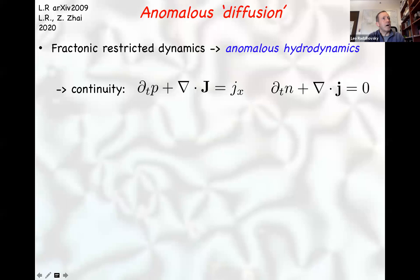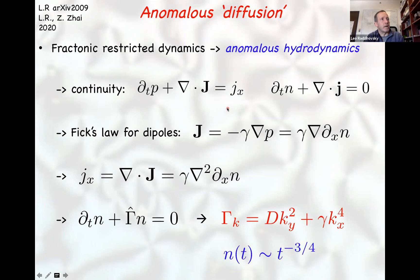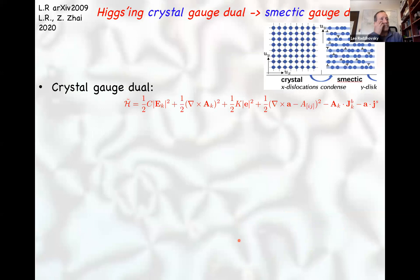One can also do hydrodynamics. Taking the two continuity equations — for charges and for dipoles, with the dipole conservation law violated by charge motion j in the x-direction — and writing down Fick's laws for dipoles and charges in the y-direction but no Fick's law for the charge current in the x-direction, one gets anomalous hydrodynamics. Rather than having standard k-squared diffusion, the relaxation rate goes as k-squared in the y-direction but as k_x to the fourth in the x-direction, leading to anomalously slow dynamics of charge relaxation.